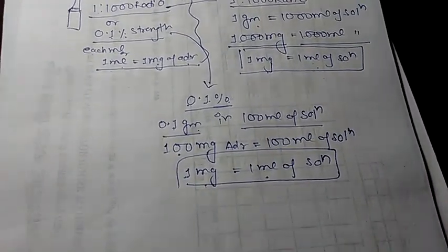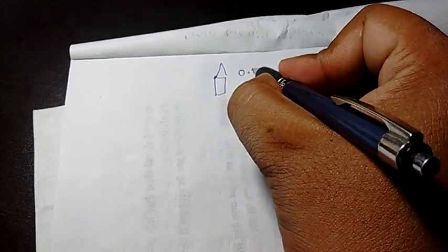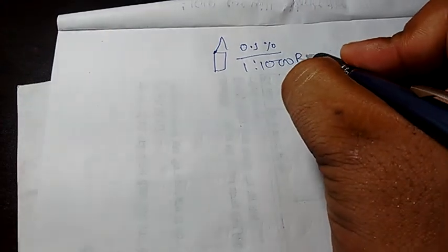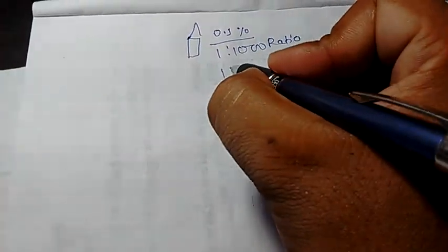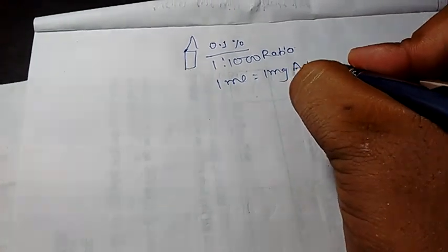Let's see the titration methods. The standard ampoule is 0.1% strength and 1:1000 ratio, meaning 1 ml of solution contains 1 mg of Adrenaline. I will divide it into different doses in the simplest way.